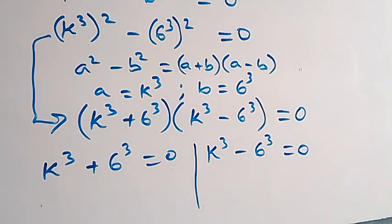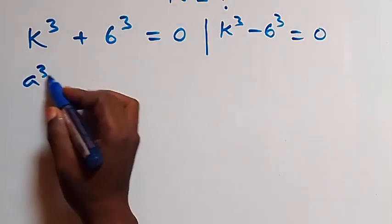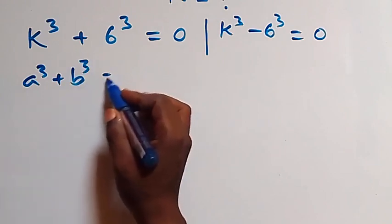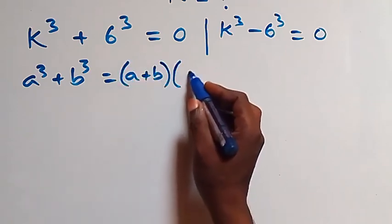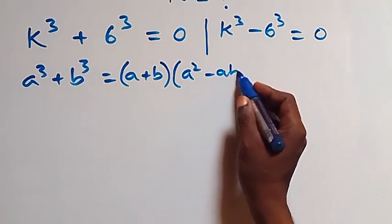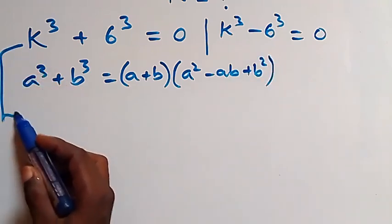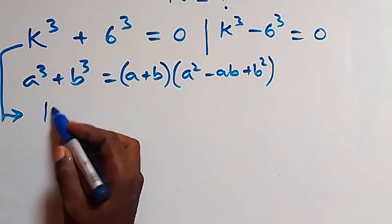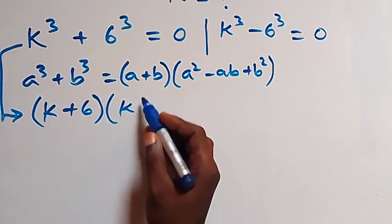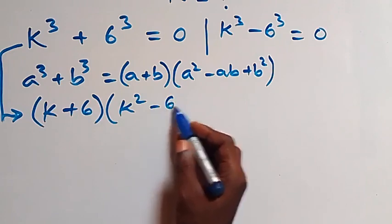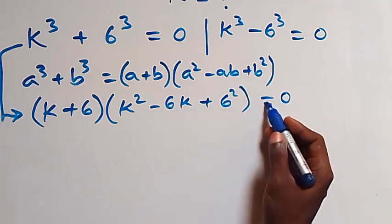Solving from the first case, this follows from the identity a³ + b³ equals (a+b)(a² - ab + b²). Comparing here, what we have becomes (k + 6)(k² - 6k + 6²) equals 0, which is the same as (k + 6)(k² - 6k + 36) equals 0.